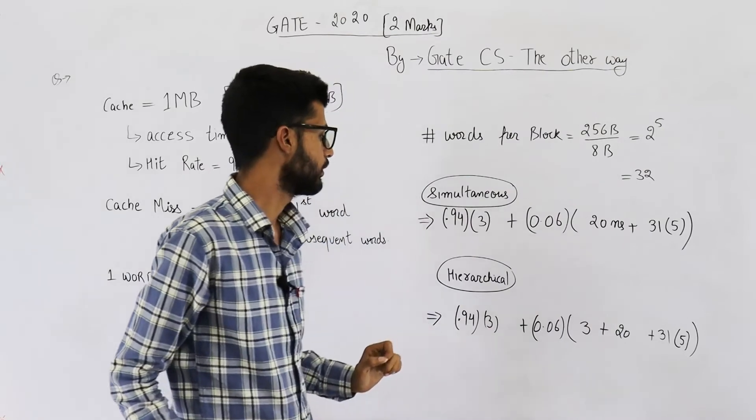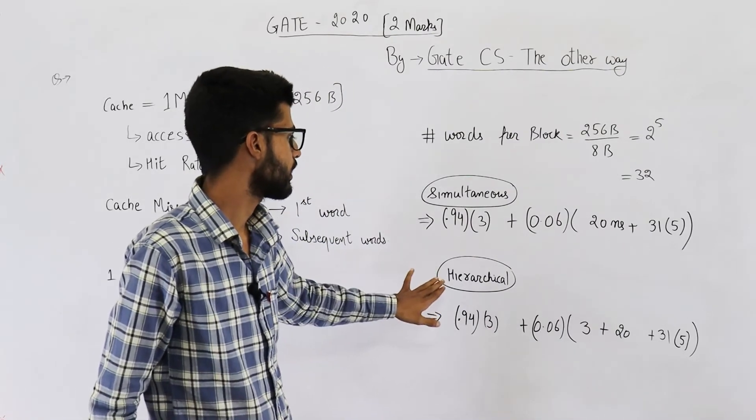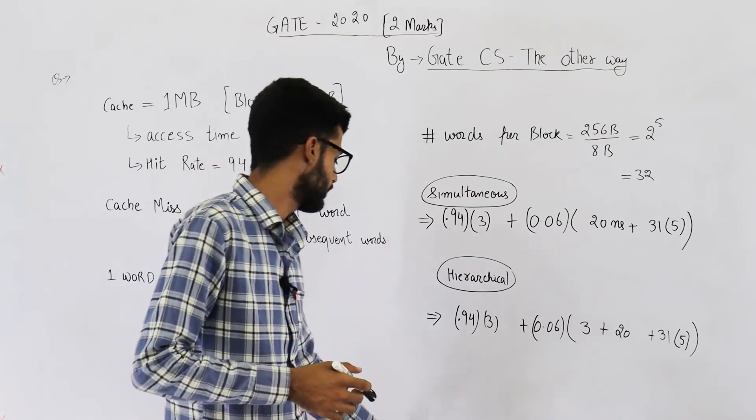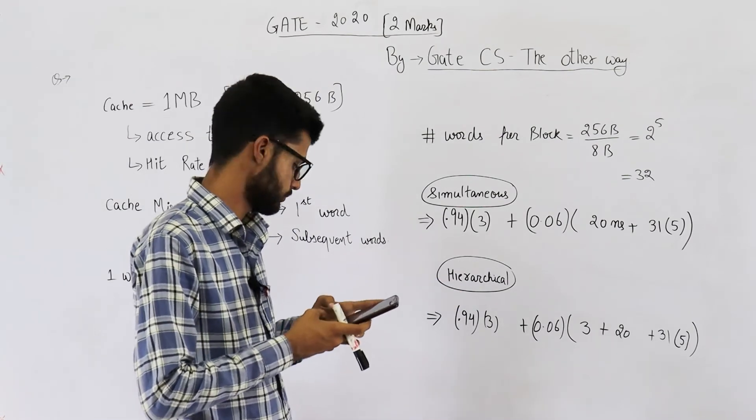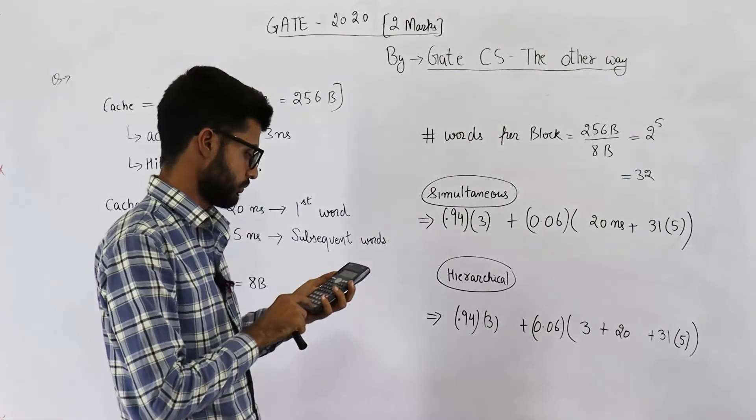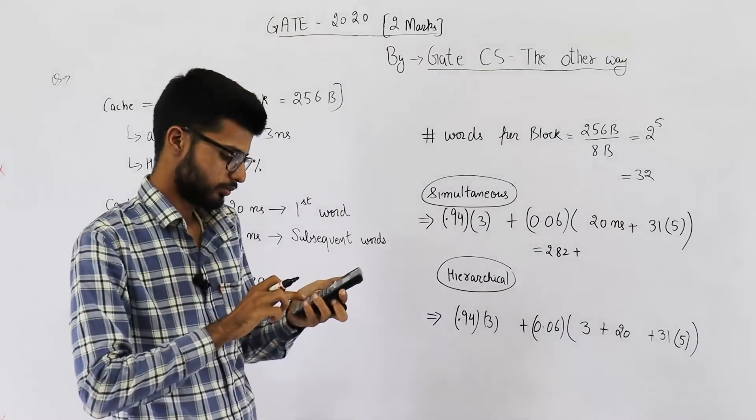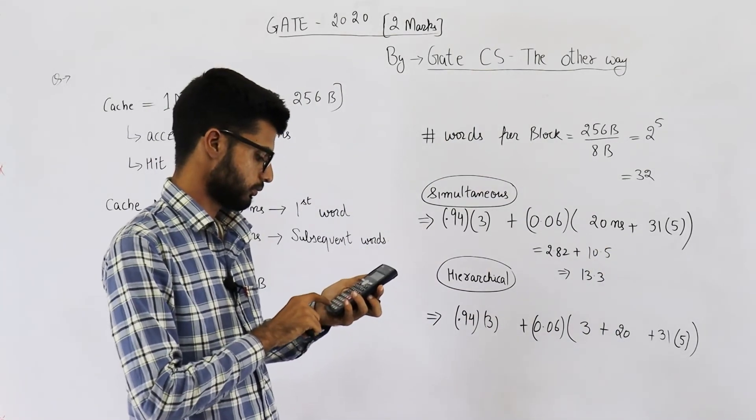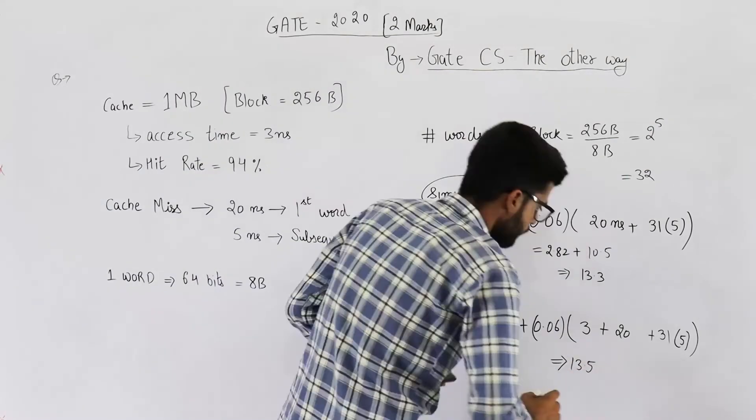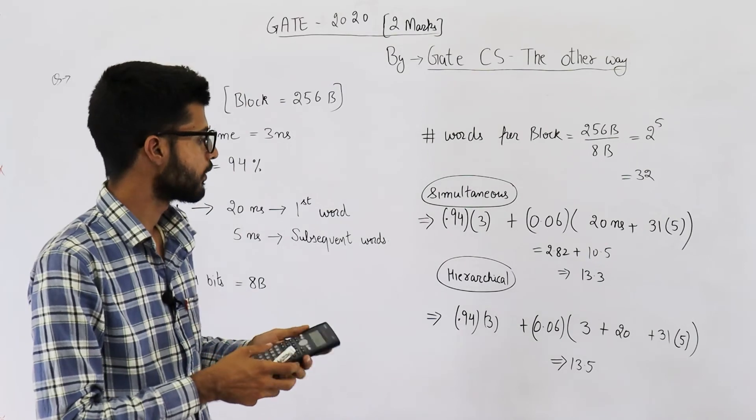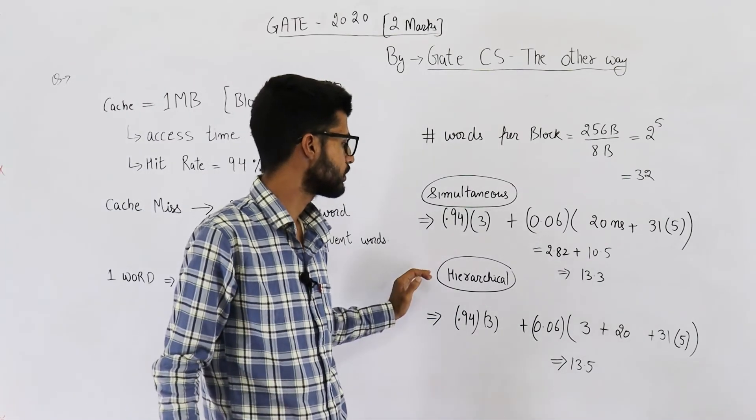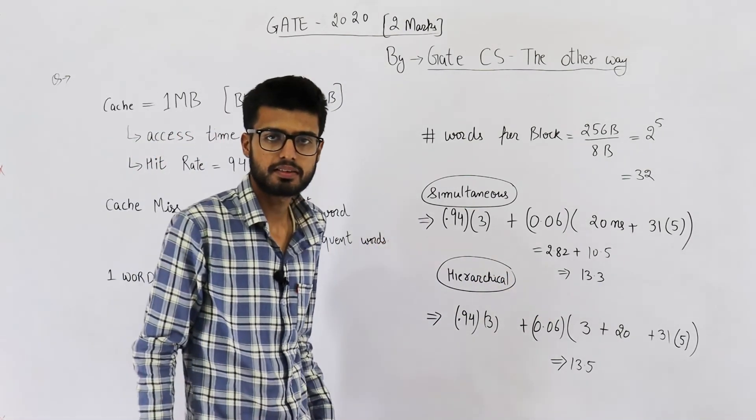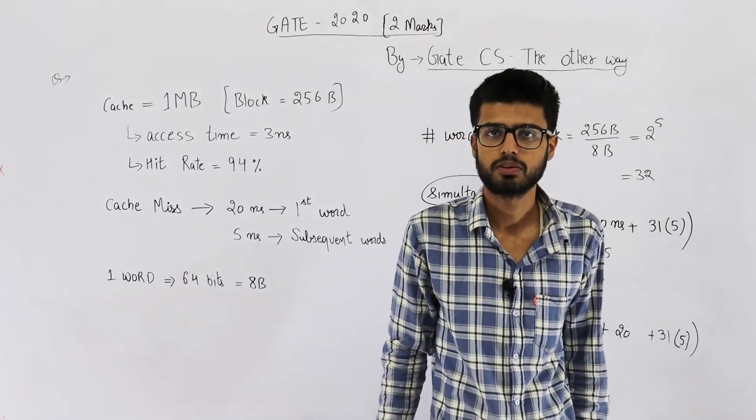In case of hierarchical, and this is the answer in case of simultaneous access. Let me just calculate these values. So your answer is 13.5 if we use hierarchical access and 13.3 if we use simultaneous access. Both of these answers were given marks in the actual GATE exam.